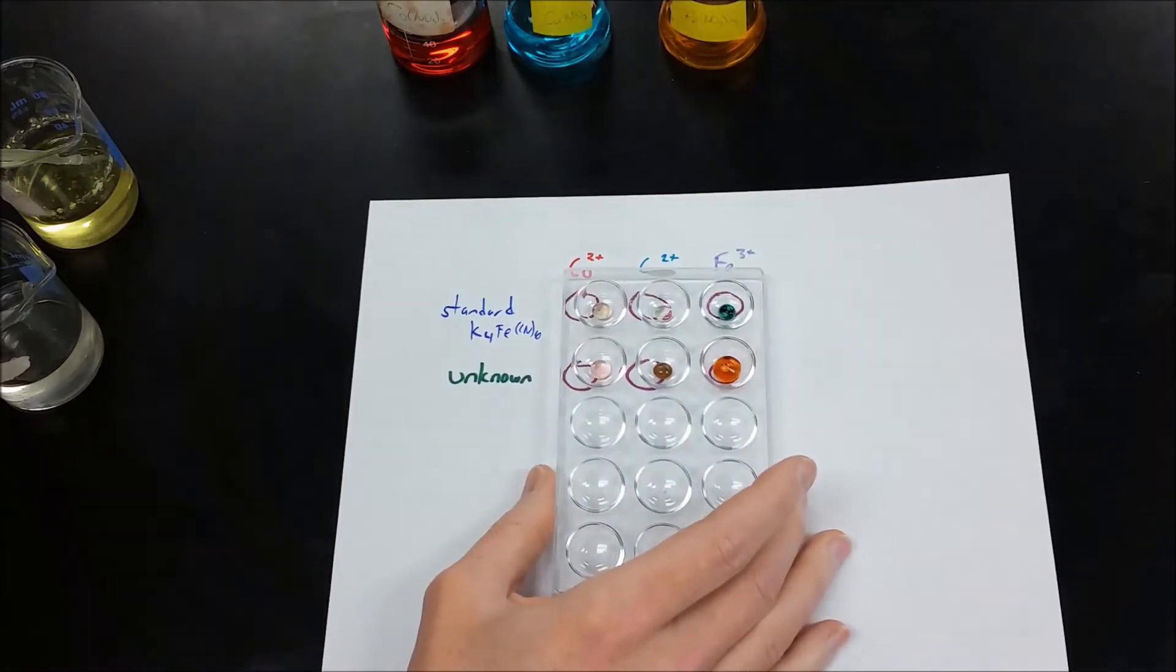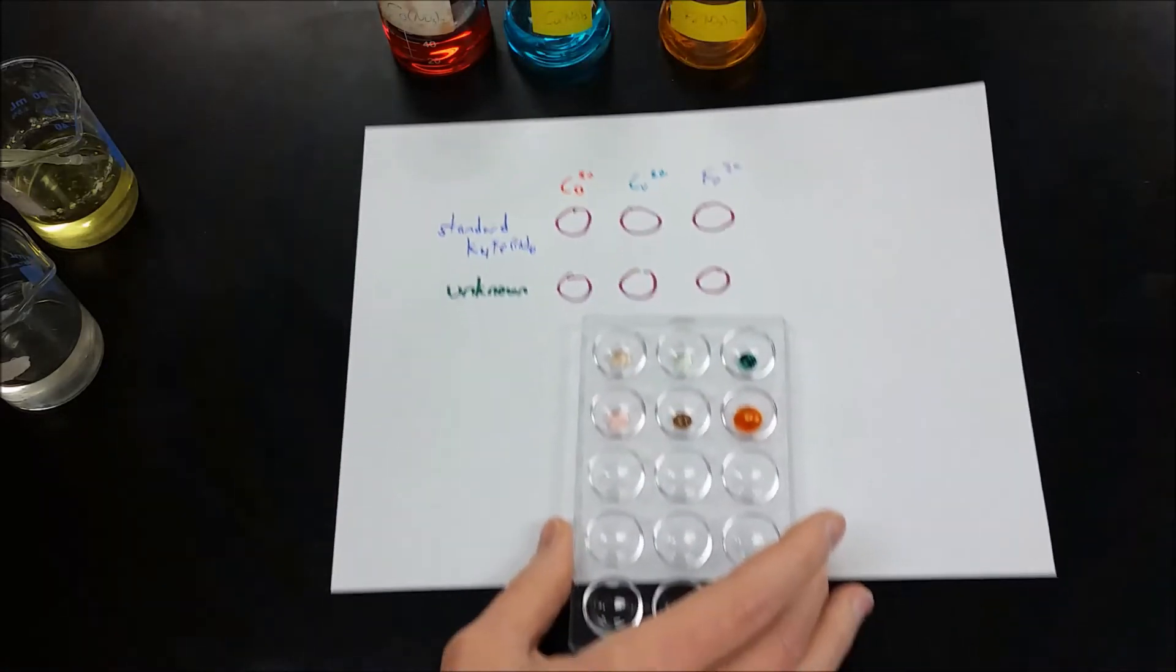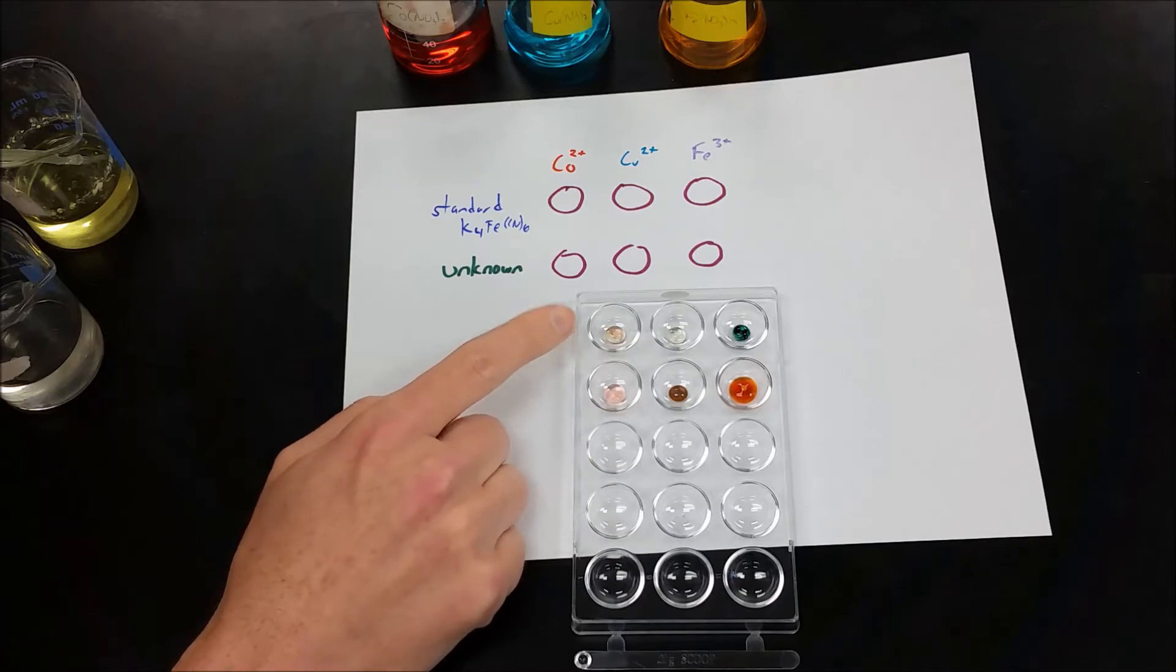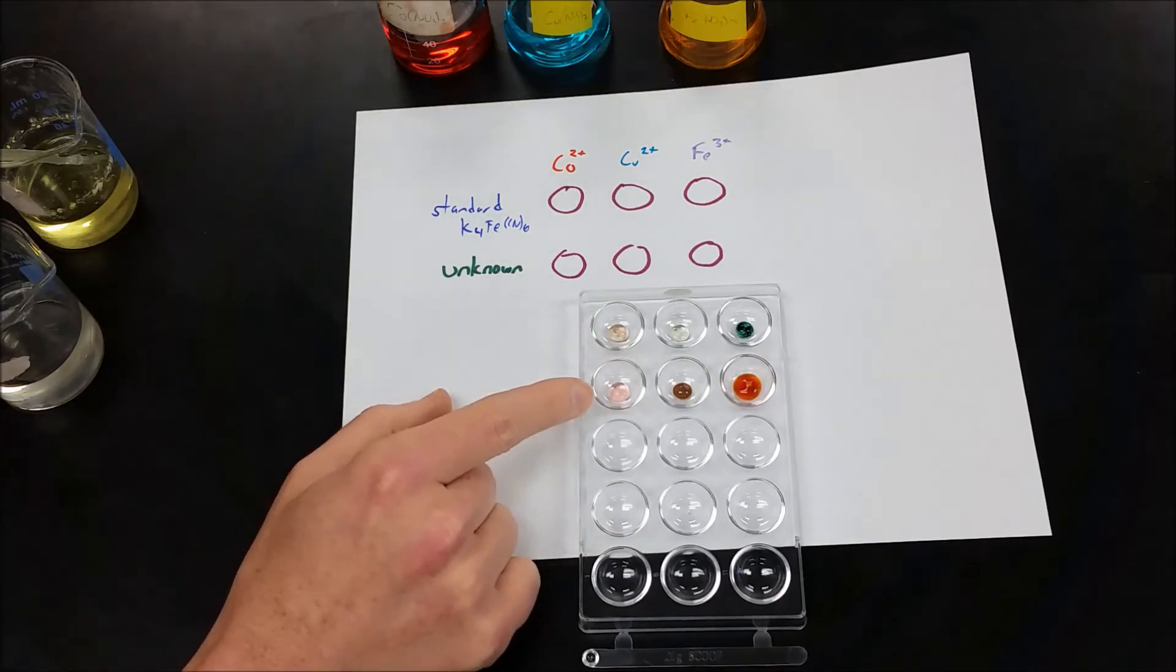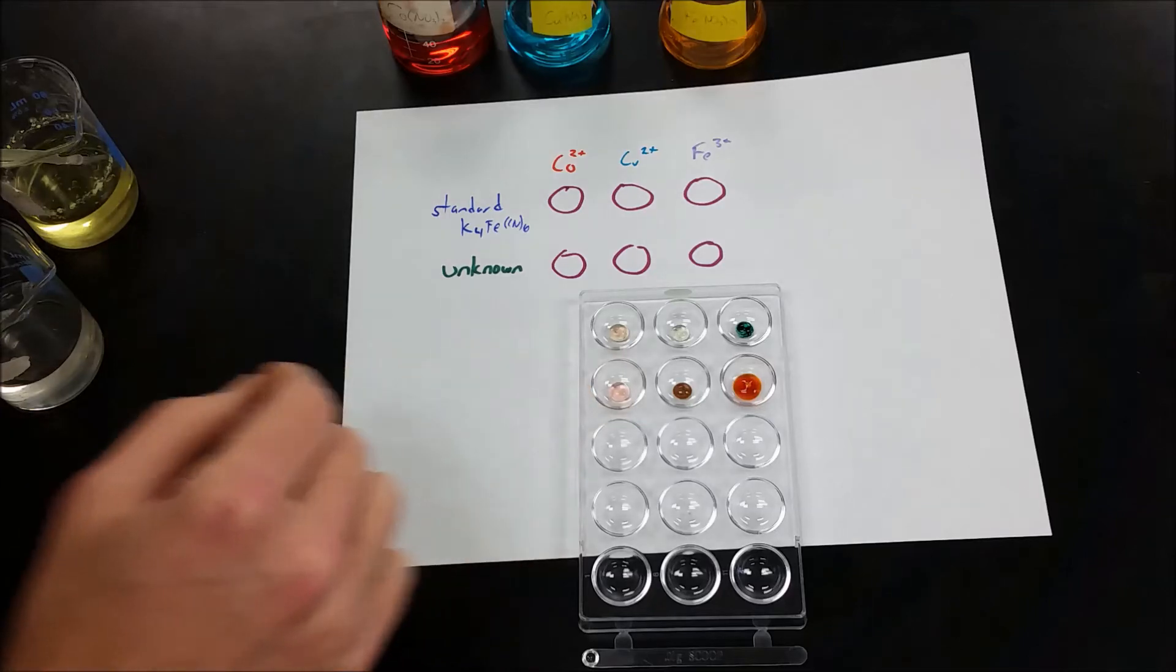What we're looking for is a comparison of the standard with our unknown. So here's what ferrocyanide does when mixed with cobalt, and here's what our unknown did. And we're looking to see, are they the same or are they different?